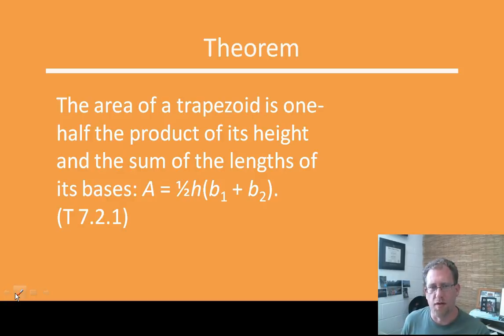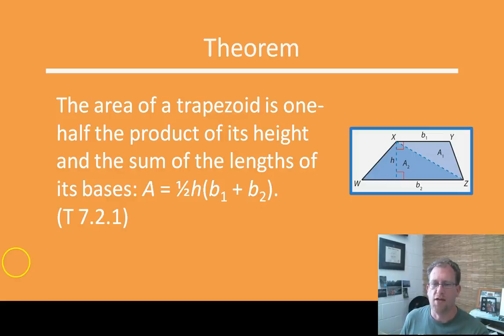So a trapezoid, the area of a trapezoid is calculated as one-half times the height times the sum of the bases: A = ½h(b₁ + b₂). A trapezoid, remember, is something where you have two parallel lines and two non-parallel lines. The parallel lines are the bases, and the area is found by calculating the height and the sum of the bases and then multiplying by one-half. Now look at this, one-half times the sum of two objects, that's the average, right?